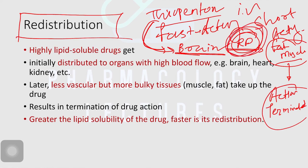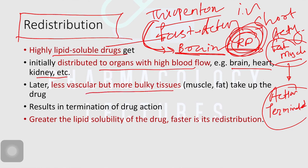That is because of this redistribution. Now, redistribution is related to highly lipid-soluble drugs, and because of that they are faster acting. Initially the drug reaches or distributes to organs with high blood flow or high perfusion — like brain, heart, kidney. And later it quickly goes into the less vascular but more bulky tissues like fat and muscles, resulting in termination of drug action.